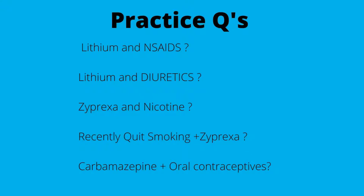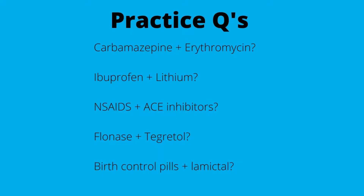Next: carbamazepine and erythromycin. Carbamazepine is an inducer, and erythromycin is an inhibitor. When an inhibitor and an inducer are combined, the inhibitor always takes priority — the inhibitor always wins. So the carbamazepine will build up to toxic levels because erythromycin is inhibiting its metabolism — it increases Tegretol levels. Therefore, you're going to decrease the carbamazepine.